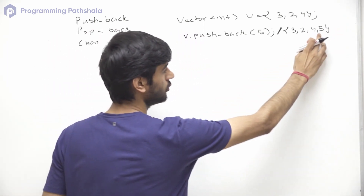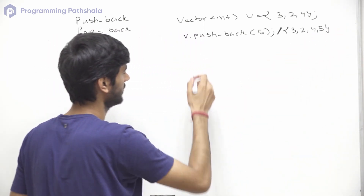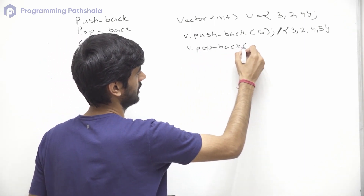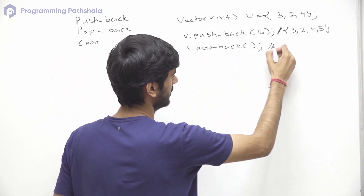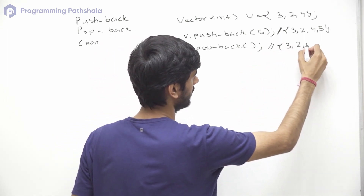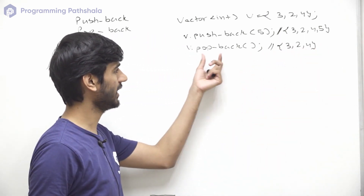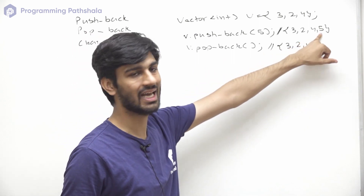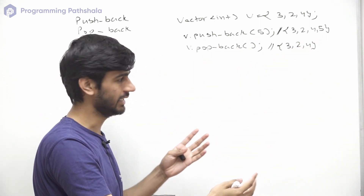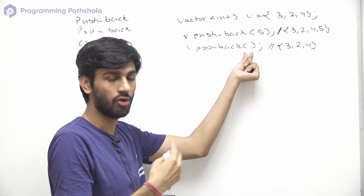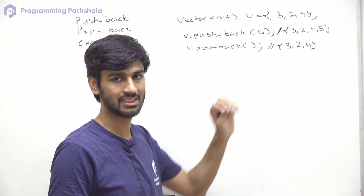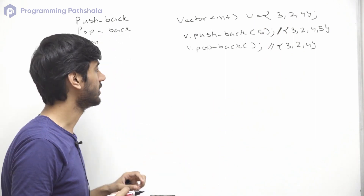Similarly, let's say now we want to remove the last element. For that we can use pop back, and now the vector will look something like this: 3, 2, and 4, because pop back removes the last element. In push back we need to pass the value we want to insert, but pop back takes no arguments since it simply removes the last element present in the vector.